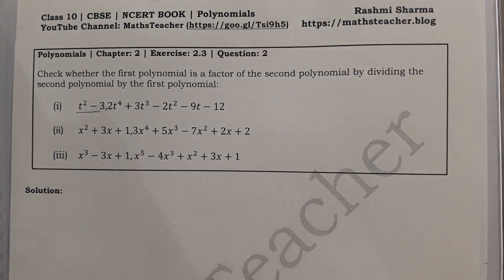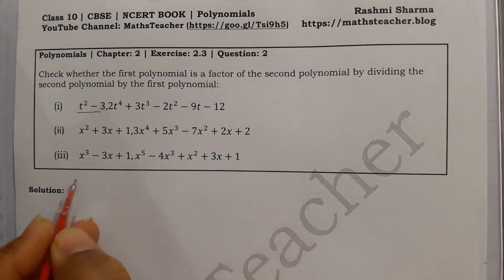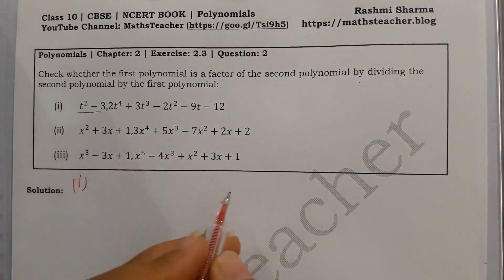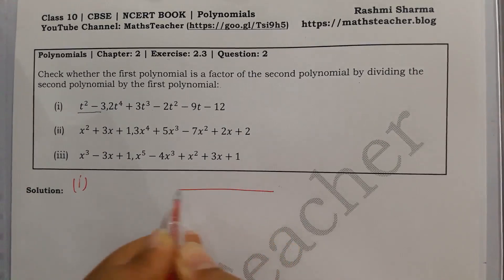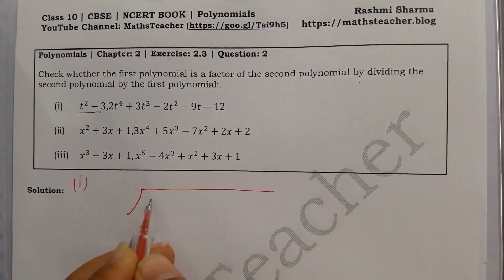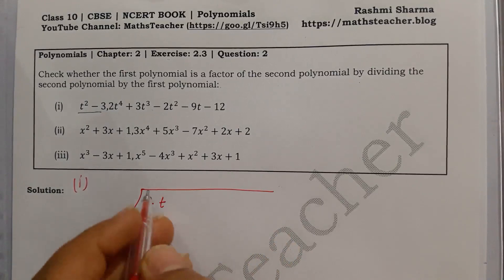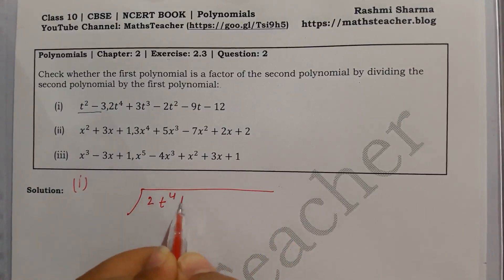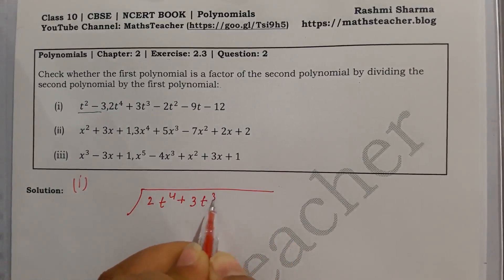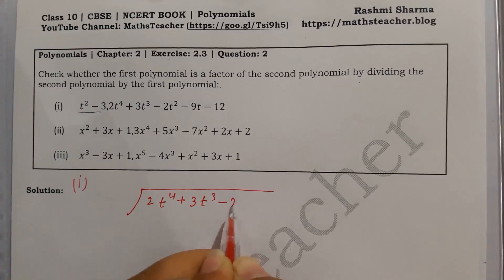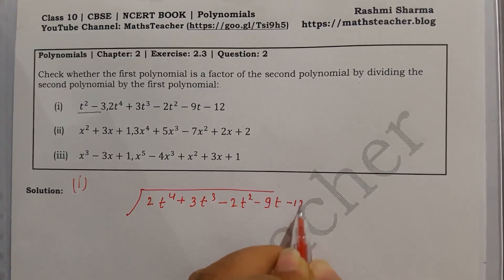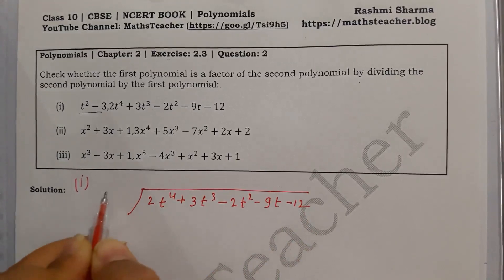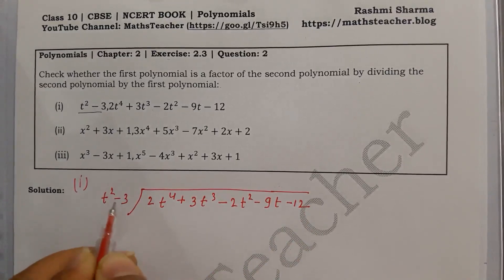Now let's divide and see if the first polynomial is a factor or not. We have to write: divide 2t⁴ + 3t³ − 2t² − 9t − 12, and we divide by t² − 3.